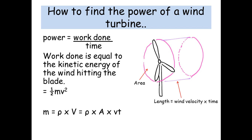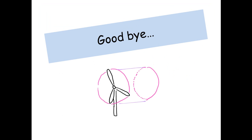So if we know this volume, the volume times by the density of air will give us the mass, and then we can put it into half mv squared. So basically we find that the power is equal to a half times the cross-sectional area, times by the density, times the velocity of the wind cubed.